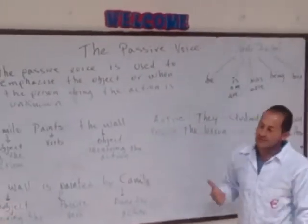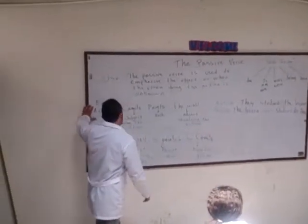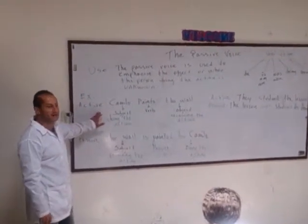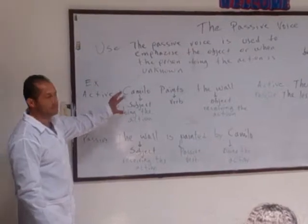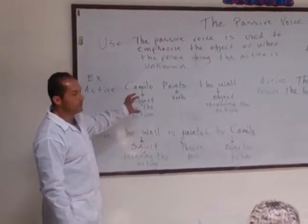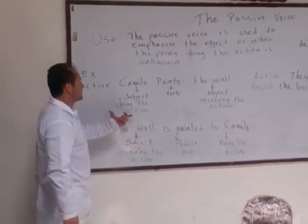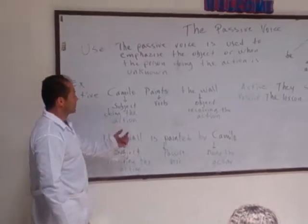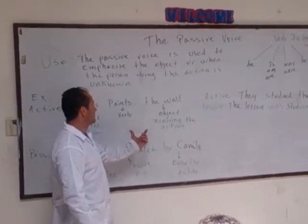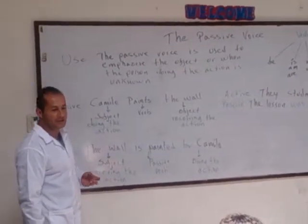Now we are going to check this example. This example is written in active voice, in simple present: "Camilo paints the world." Camilo is the subject performing the action, the verb is "paints," and "the world" is the object receiving the action.